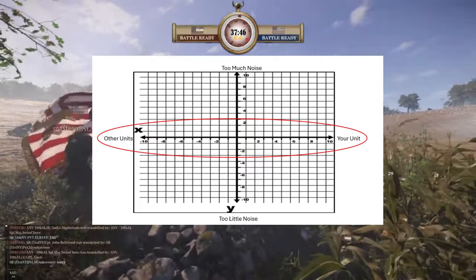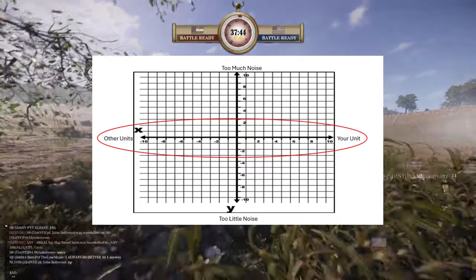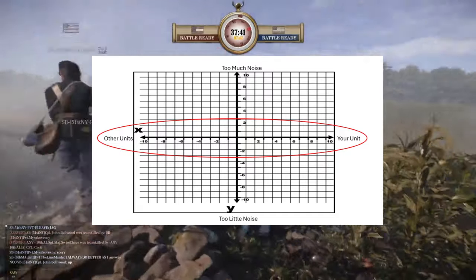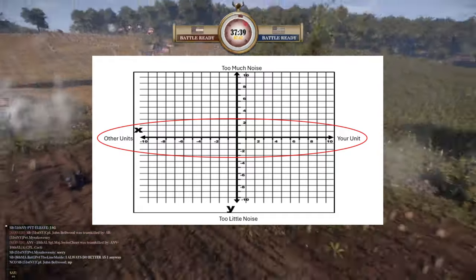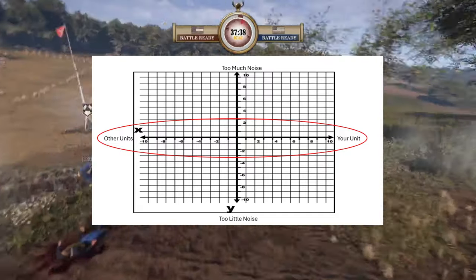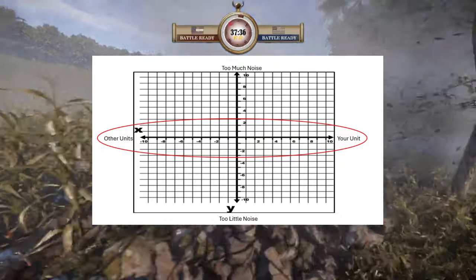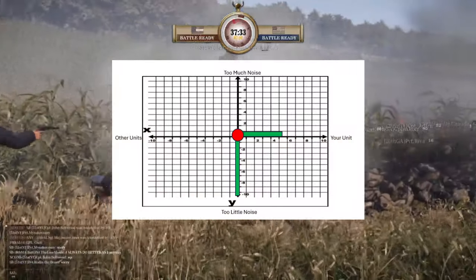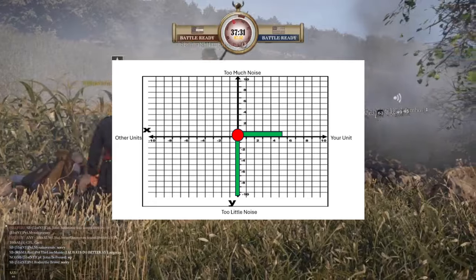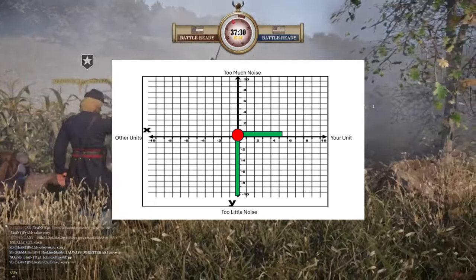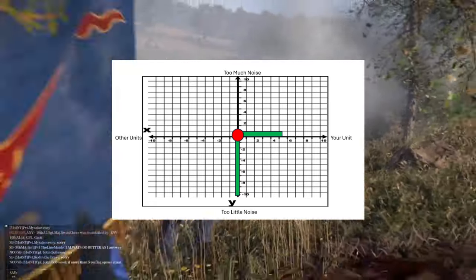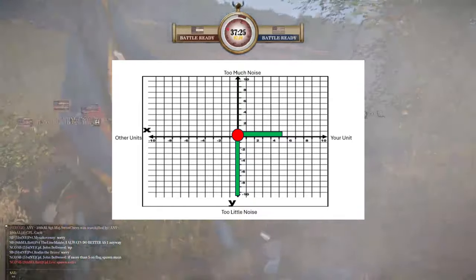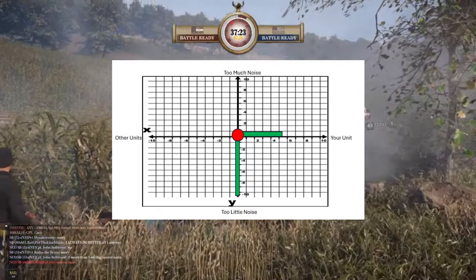However, the more communications that occur for either side on the X axis, there is a commensurate increase in the total communication noise that the commander must deal with. For example, an officer may be laying out specific guidance to their formation in-game, with discussions among the troops about the orders. This raises the bar on the level of communication and perhaps lands at the ideal level.